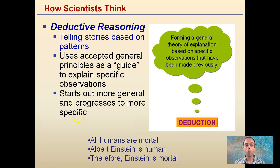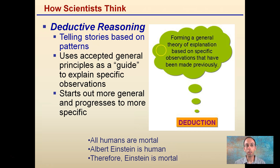An example of deductive reasoning would be: all humans are mortal; Albert Einstein is human; therefore, Einstein is mortal. It's forming a specific conclusion based on general principles, using this deductive reasoning pattern.